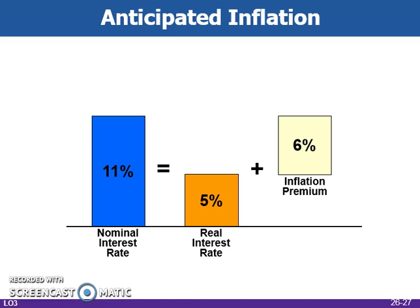The real interest rate is defined as the nominal rate minus the inflation premium. This figure shows the inflation premium and nominal and real interest rates. The inflation premium, or the expected rate of inflation, gets built into the nominal interest rate. Here, the nominal interest rate of 11% comprises the real interest rate of 5% plus the inflation premium of 6%.